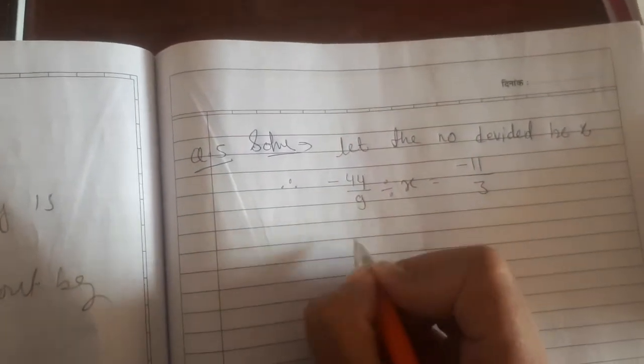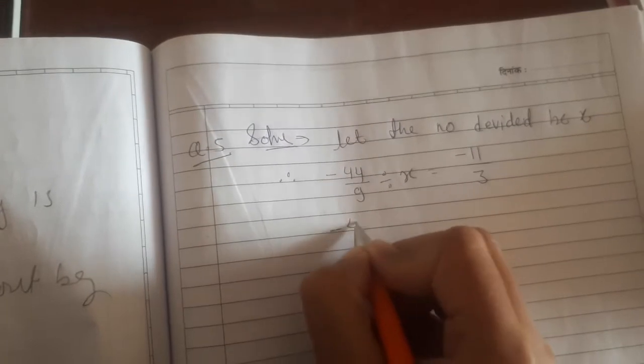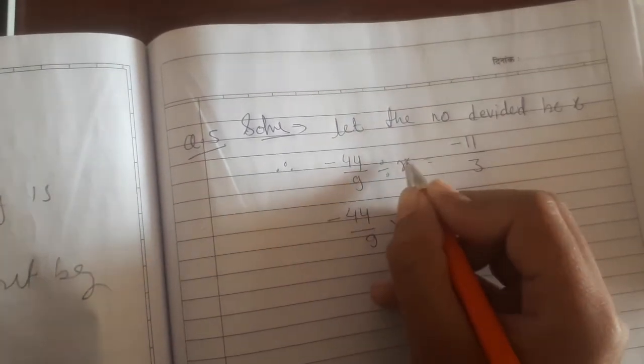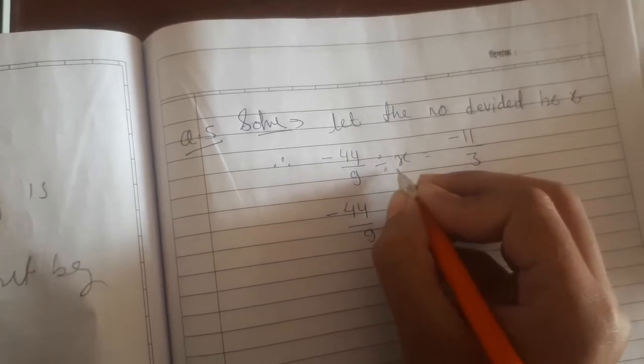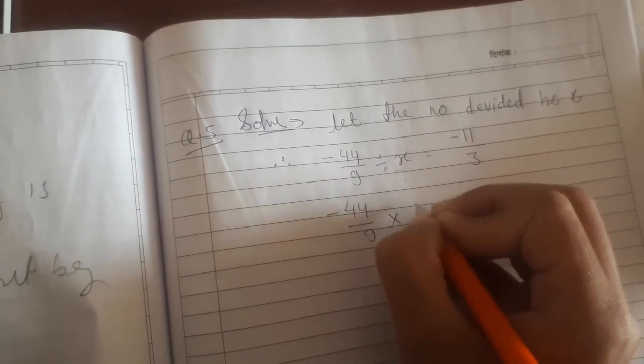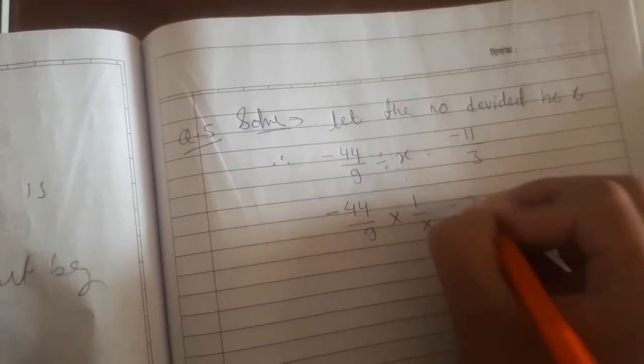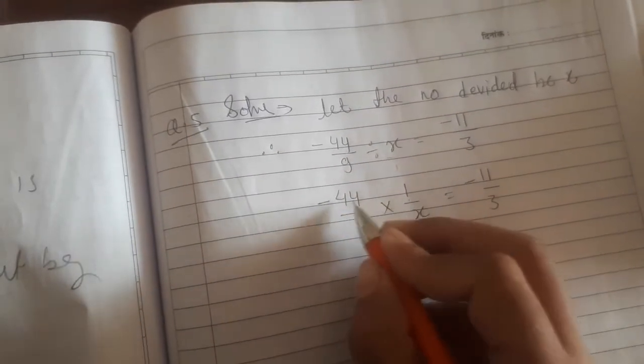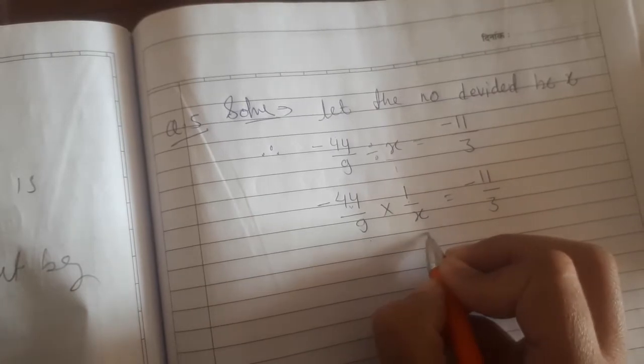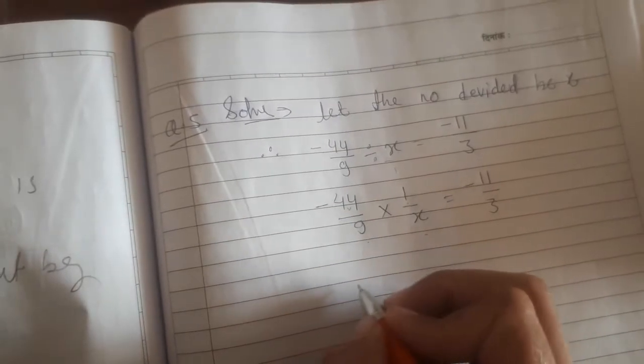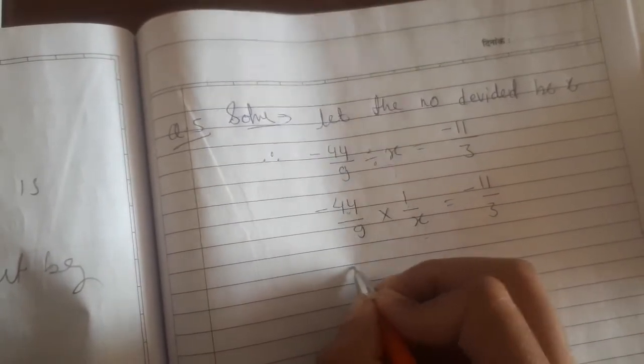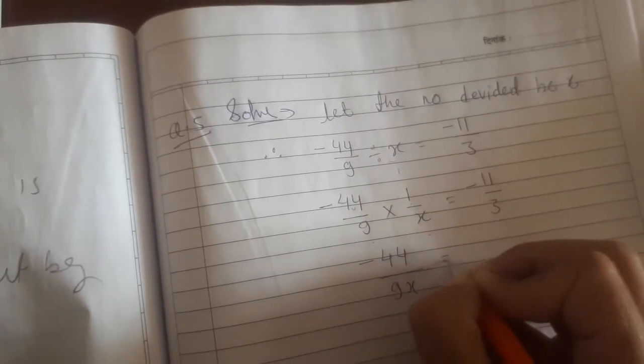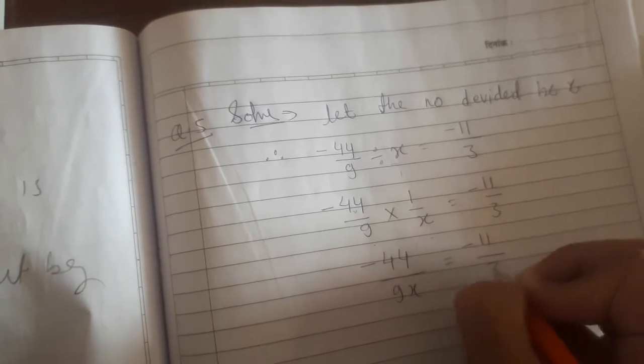Next, -44/9 divided by x equals -11/3. We multiply numerator with numerator and denominator with denominator. So -44 times 1 is -44, 9 times x is 9x, giving us -44/9x equals -11/3.